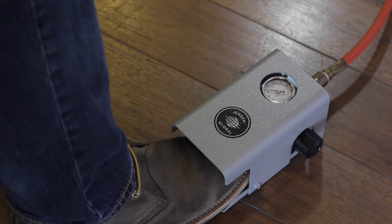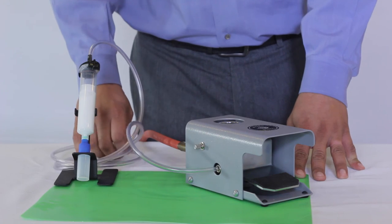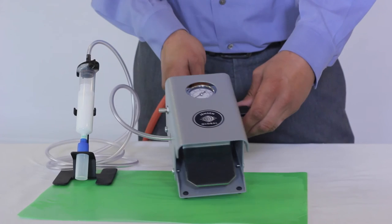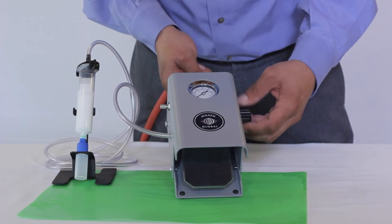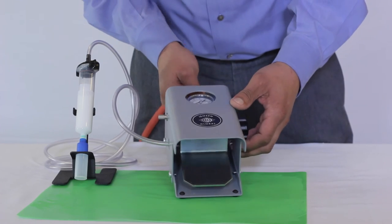With the regulator at 0 psi, adjust in 5 psi increments till you reach your desired air pressure. If your material is thick, adjust in 10 psi increments to speed up the process.